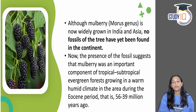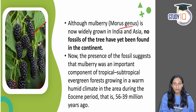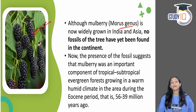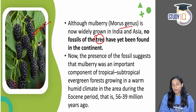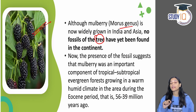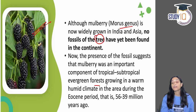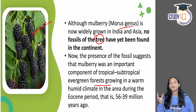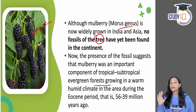Mulberry's scientific name is genus Morus. This fruit grows anywhere in India and is very tasty. Until now, no fossil of this tree existed anywhere on the entire continent. Its fossil presence tells us it was an important component of tropical and subtropical evergreen forests that must have grown in warm or humid climates during the Eocene period.